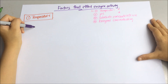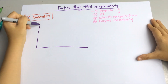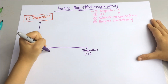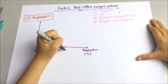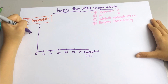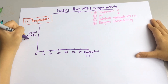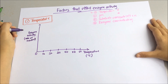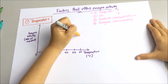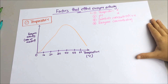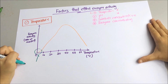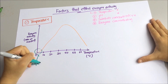This is a very popular question in your exams. They will give you a graph like this. The x-axis shows temperature, and the y-axis indicates enzyme activity, which is measured as the rate of reaction. So this is the curve. At low temperature, around zero, the enzyme activity is almost zero as well.